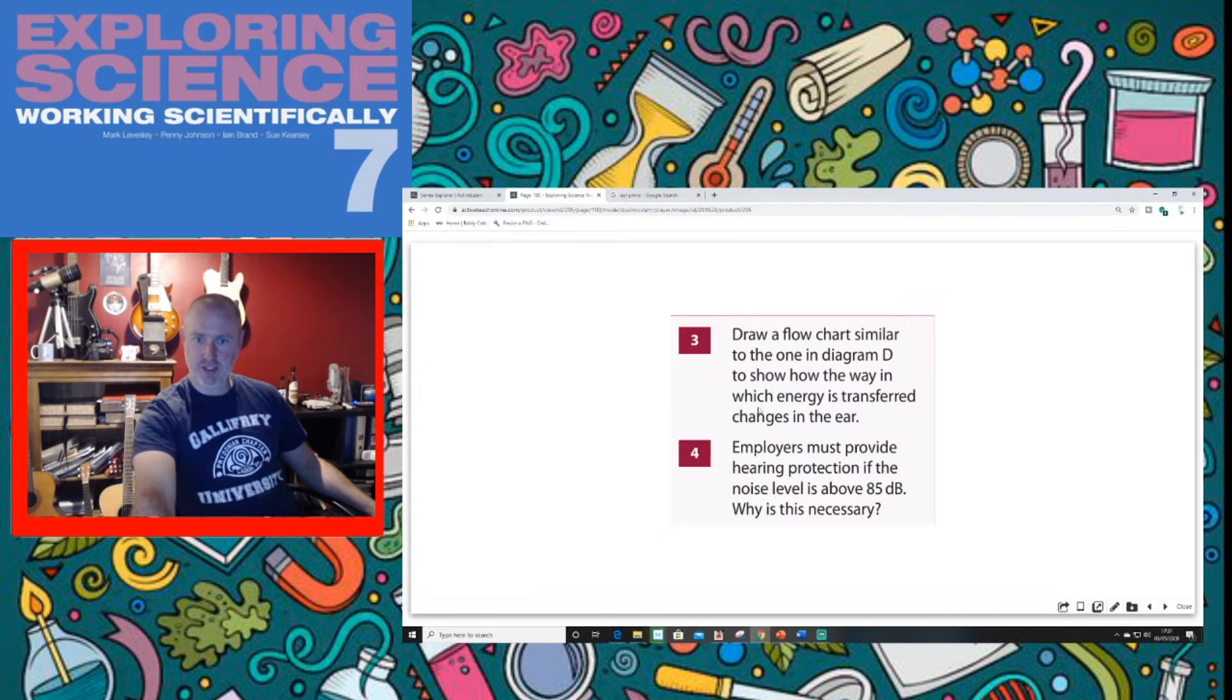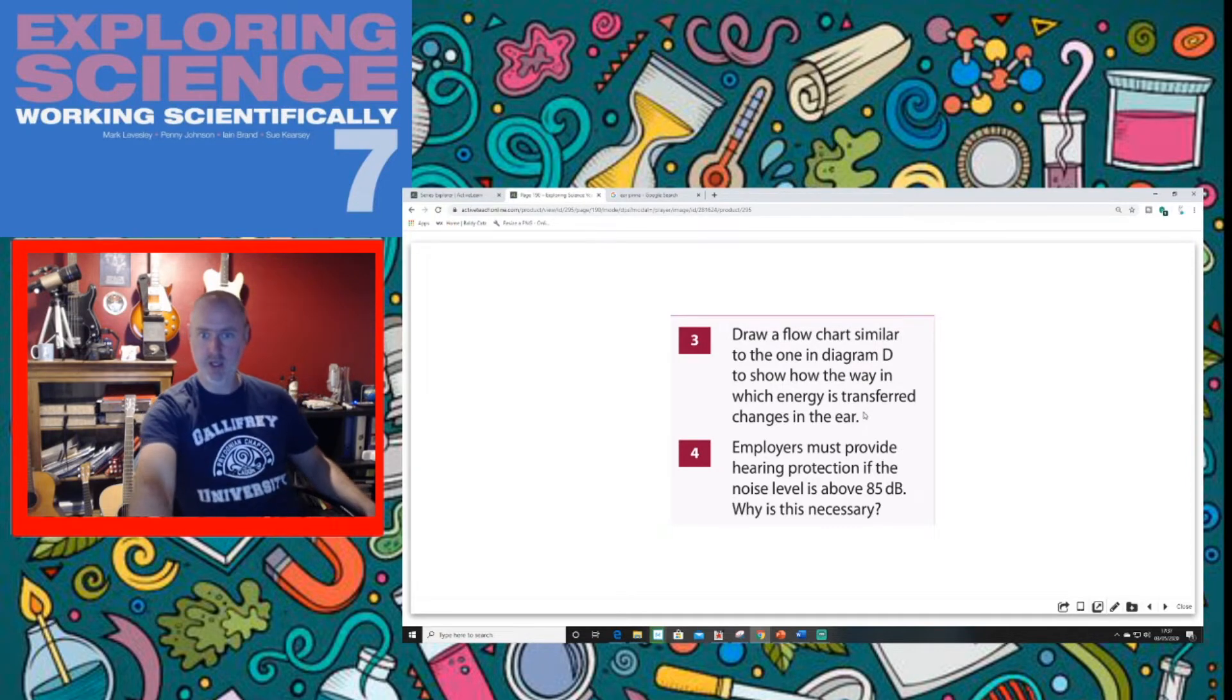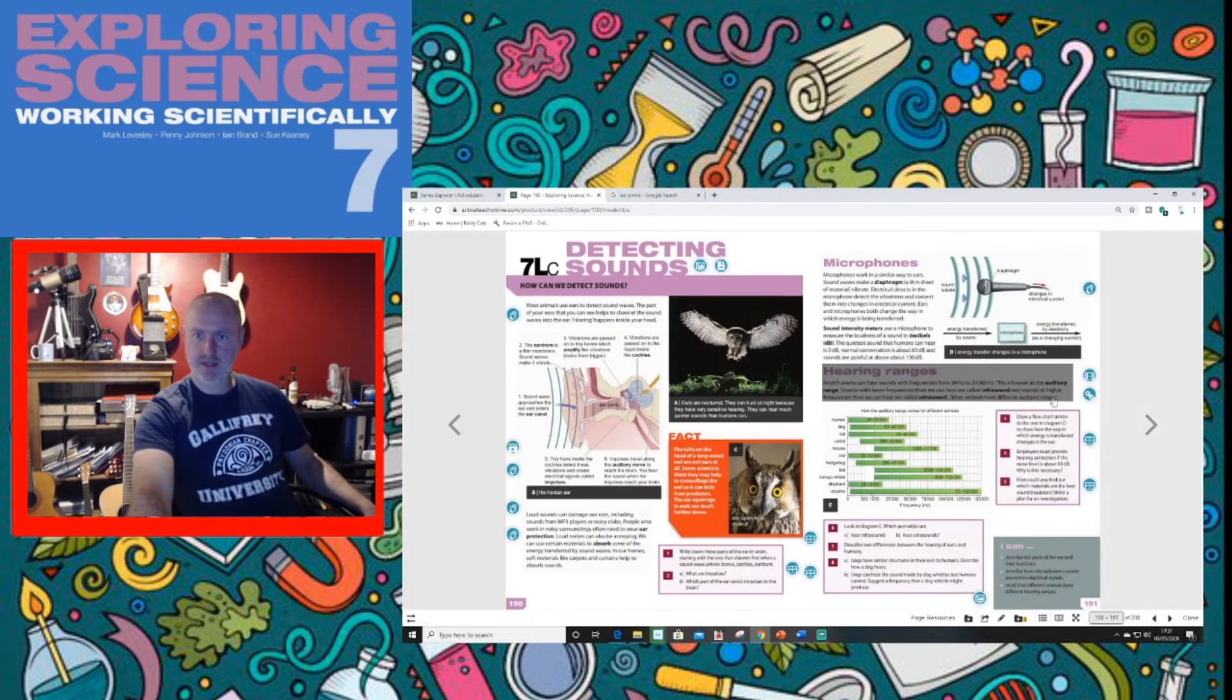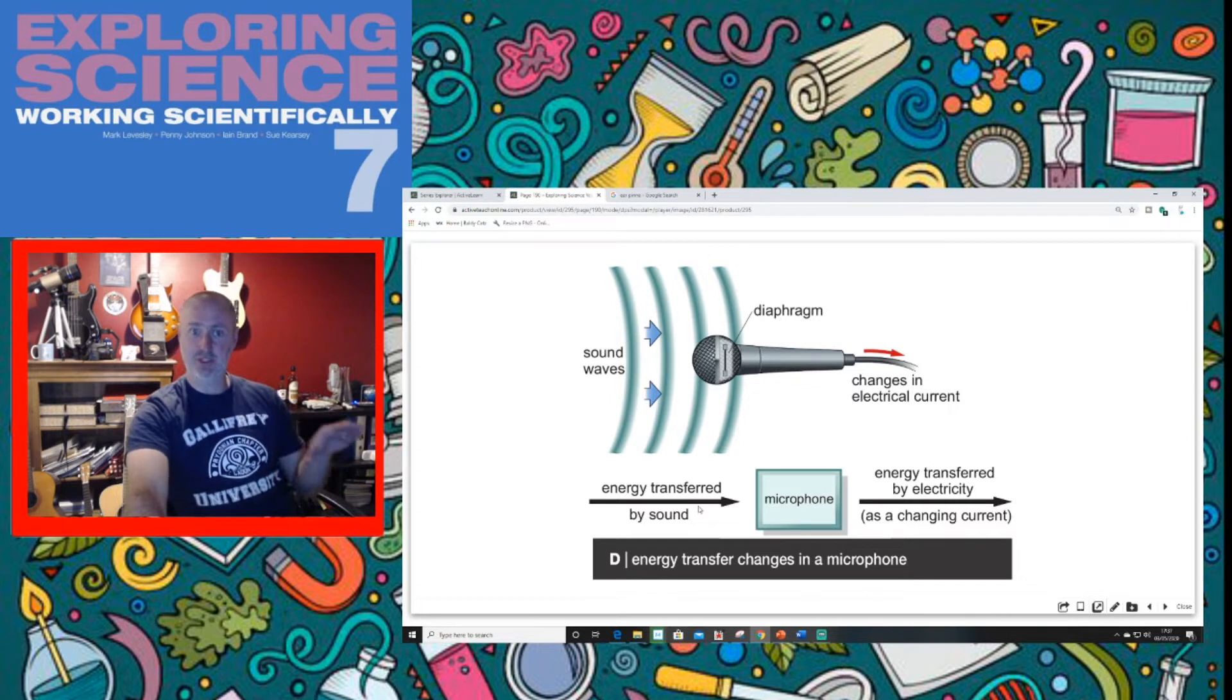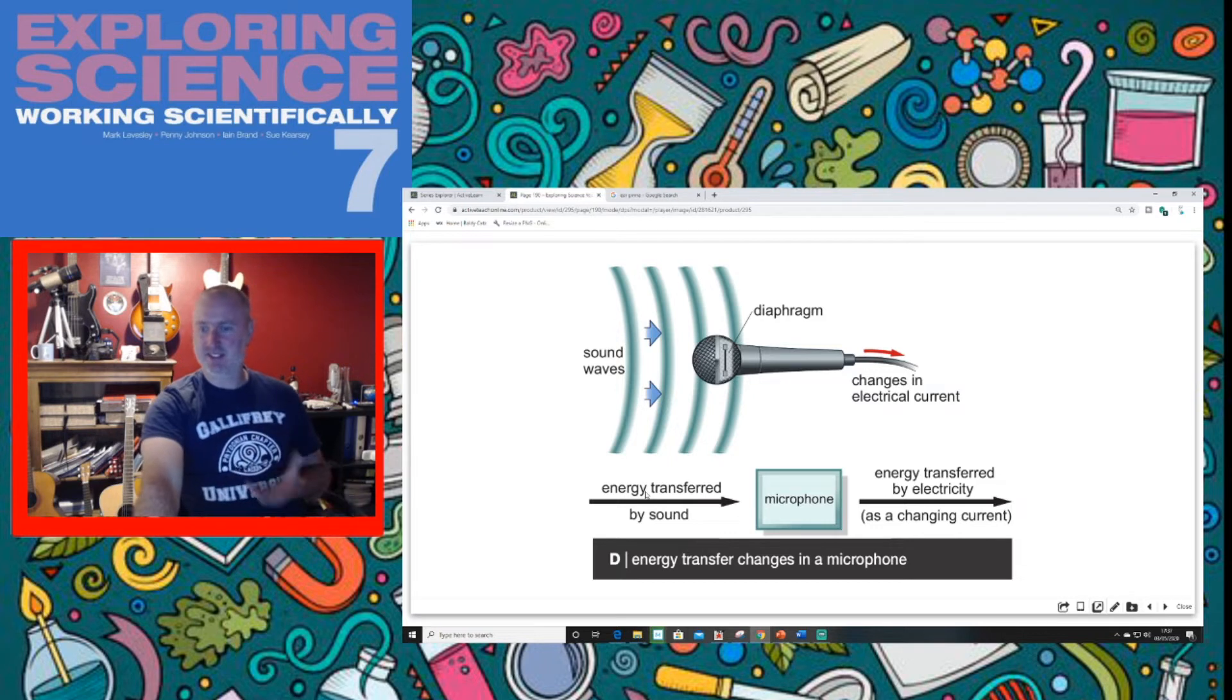Draw a flowchart to show the way in which energy changes is transferred in the ear. What does that mean? We looked at this. This is a simple energy transfer chain or energy transfer diagram, and the question is asking us to draw one similar to the ear. Now, when energy transfers happen in the ear, it's the same as the microphone. I think I touched on that before.